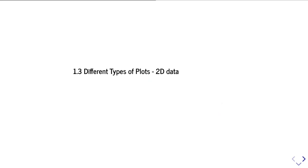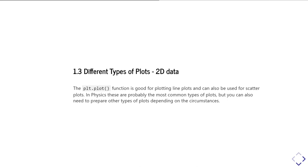For the final two parts of this unit, I want to take you through some examples of using matplotlib to create different types of plots. We're going to start with two-dimensional data, that is XY data, because that's the most common thing you come across. So far we've used plot.plot, which is good for creating line plots and scatter plots. In physics, scatter plots and line plots are probably the most common types of plots you do, but you also need to prepare other types of plots depending on the circumstances.